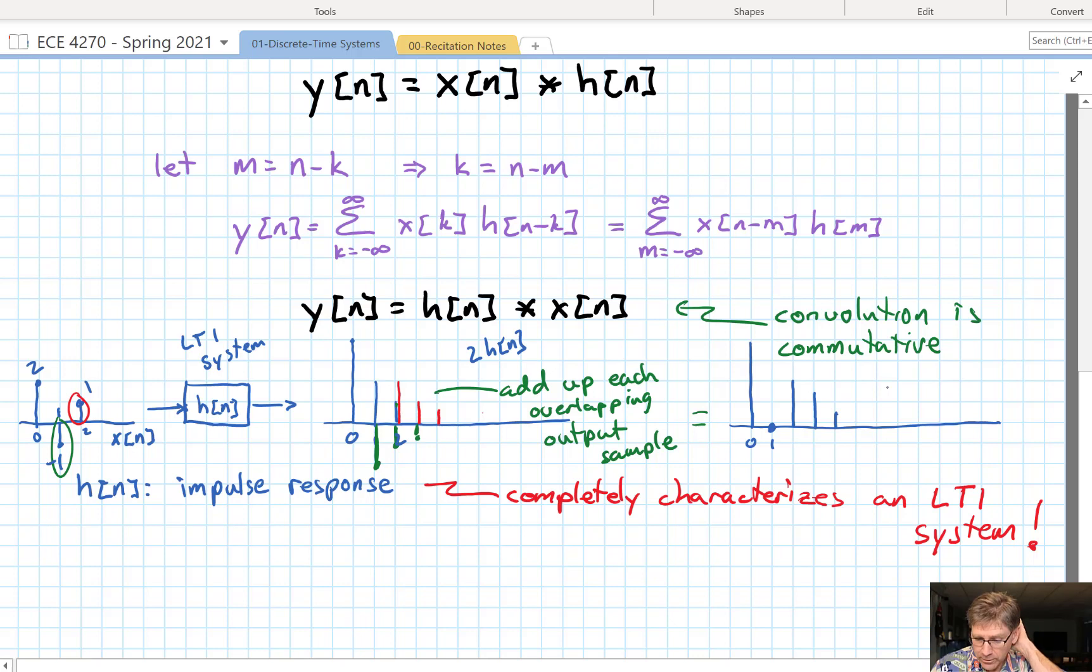Now if we look back at our equation, we can see it right above. We have essentially scaled each, or delayed, and scaled each impulse response by the corresponding signal value. And then we've summed them up. And that gives us our output. So that's one way of visualizing what's going on with the convolution equation.